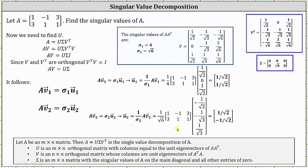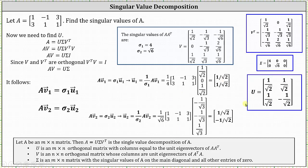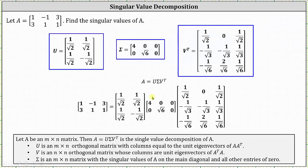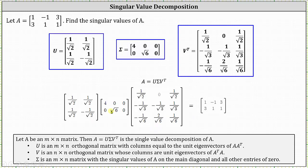You might ask why we use these formulas rather than finding unit eigenvectors of A times A transpose directly. When it comes to unit eigenvectors, there is also a unit vector in the opposite direction, which would not give an accurate singular value decomposition. By using the formulas, we get the correct unit eigenvector. So to finish: A equals U times sigma times V transpose, which was verified using the Desmos matrix calculator — the product on the right equals matrix A. I hope you found this helpful.